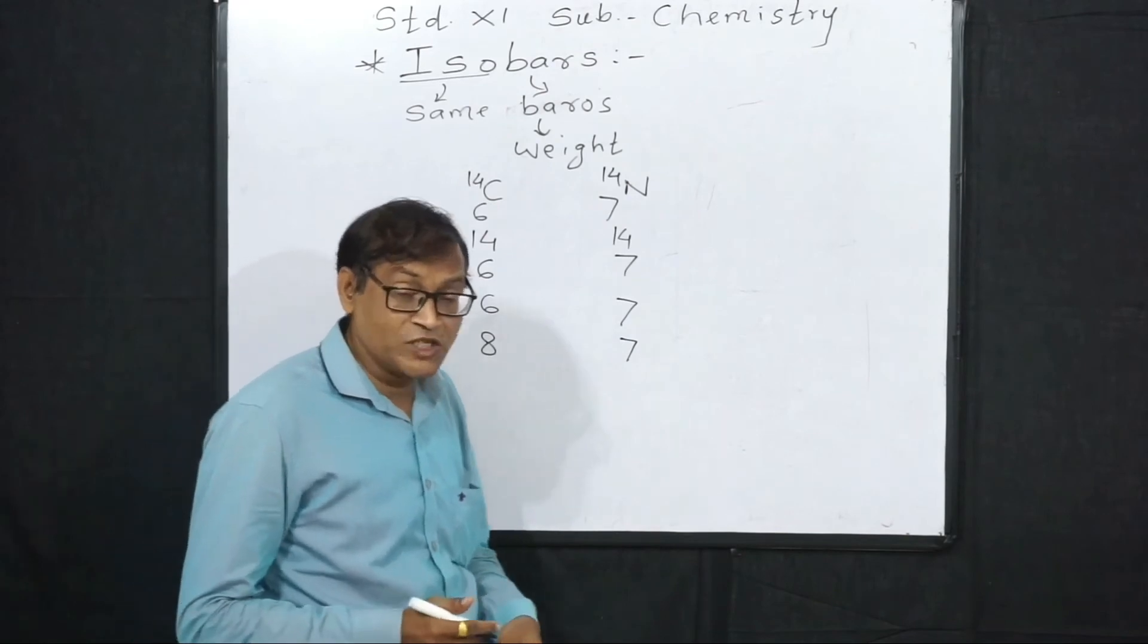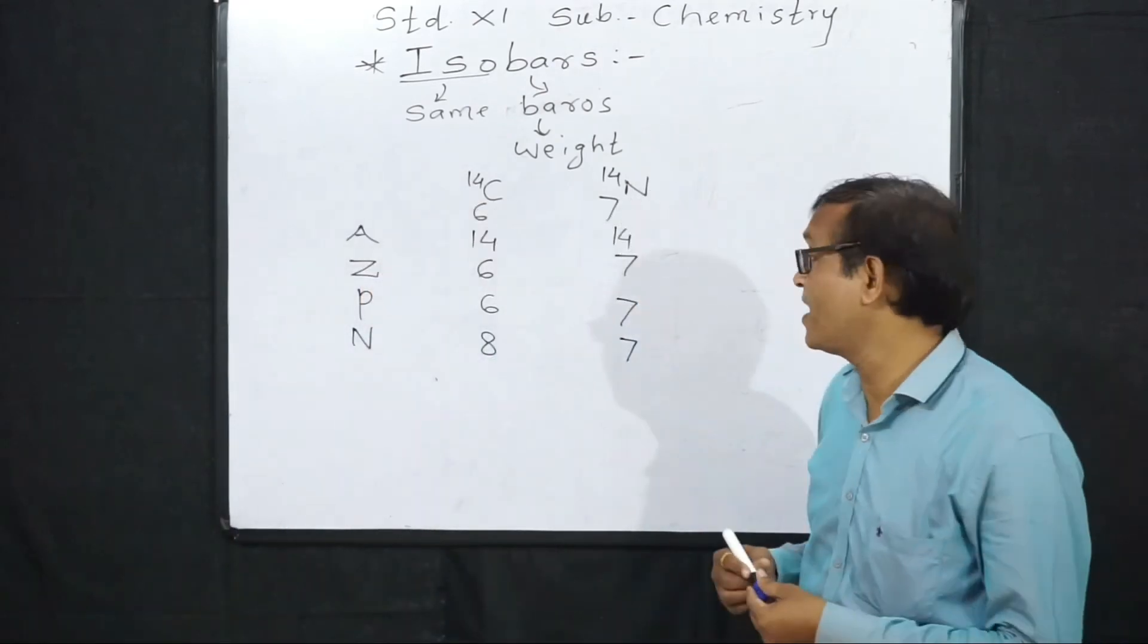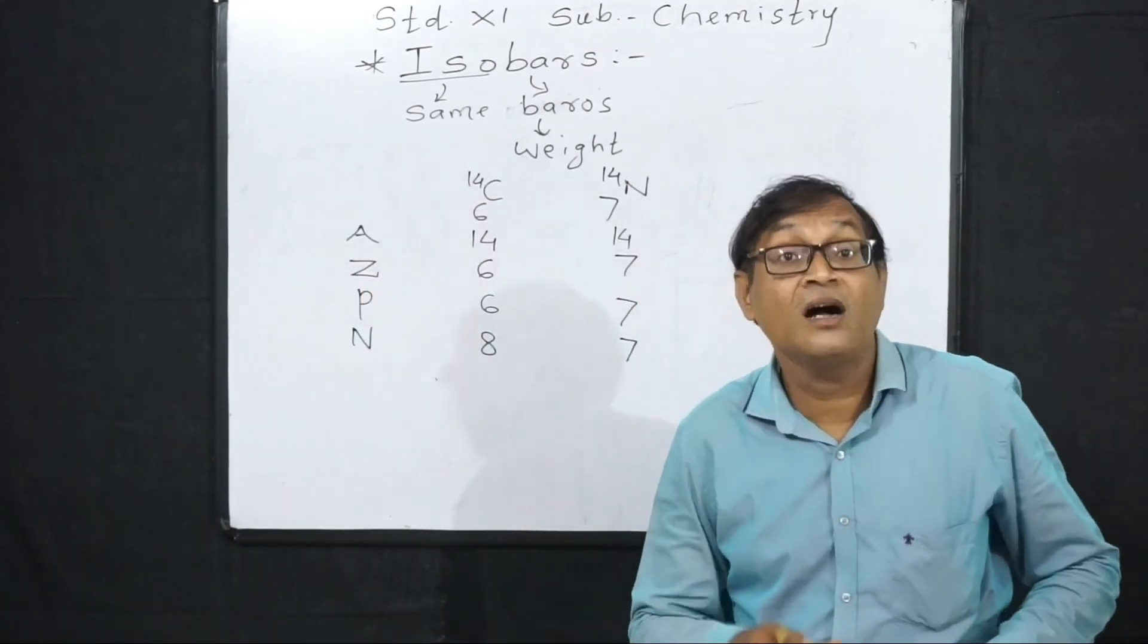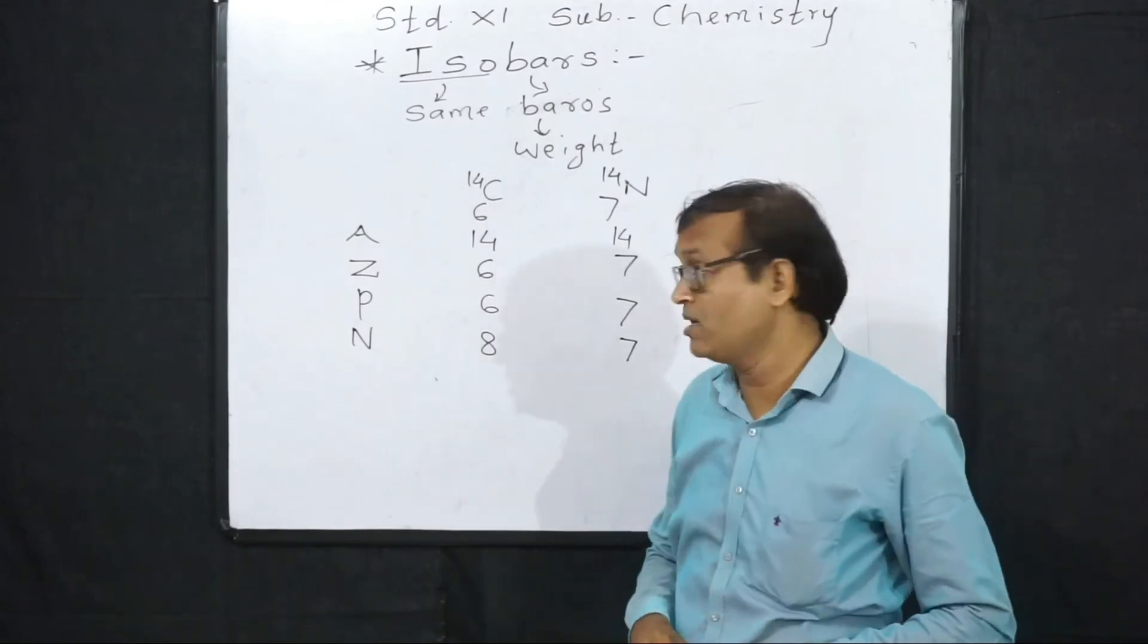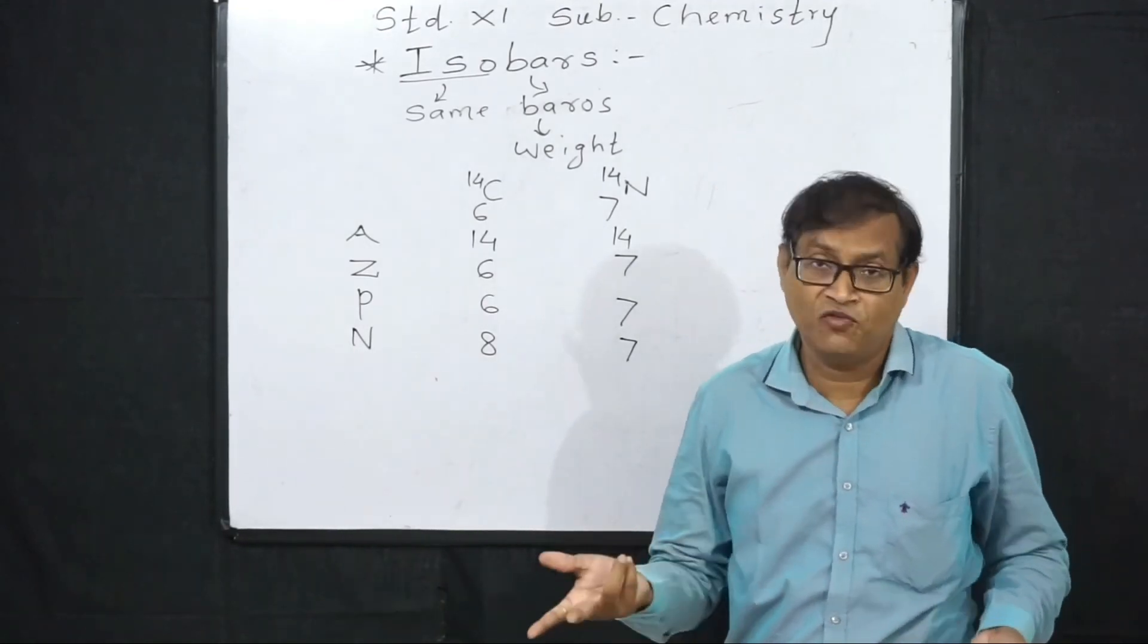So isobars mean mass number same, different atomic number. Protons and neutrons are different.